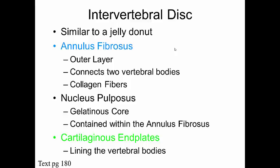The other thing to keep in mind are the three features of the intervertebral disc. The annulus fibrosis is the outer layer — it connects the two vertebral bodies and is a web of collagen fibers. The nucleus pulposus is the gelatinous core, and then the cartilaginous endplates line the vertebral bodies.